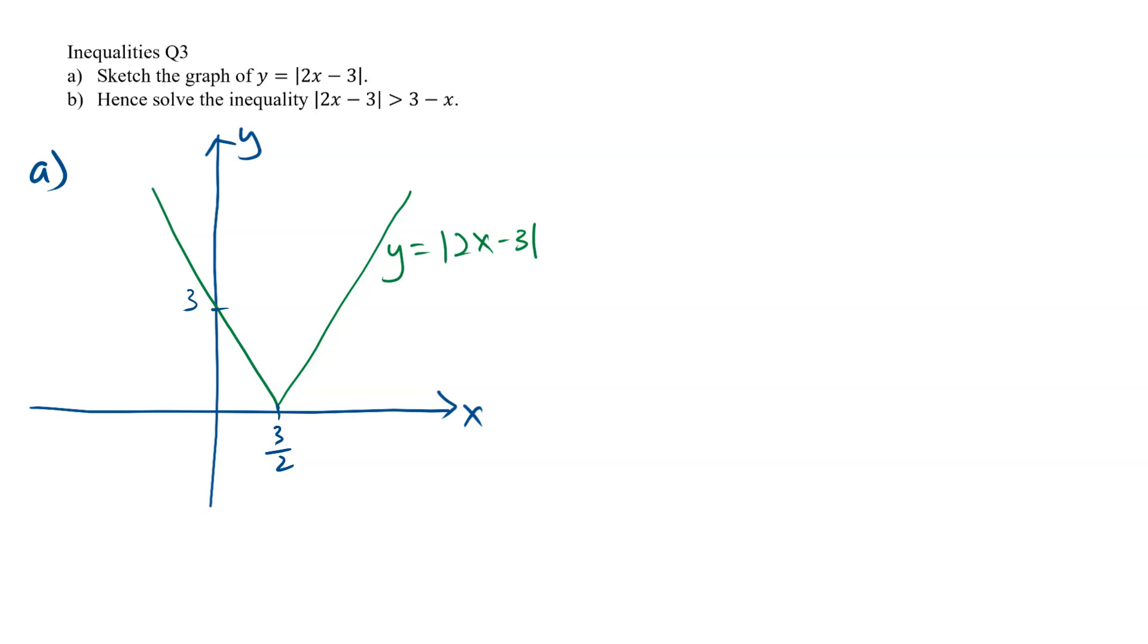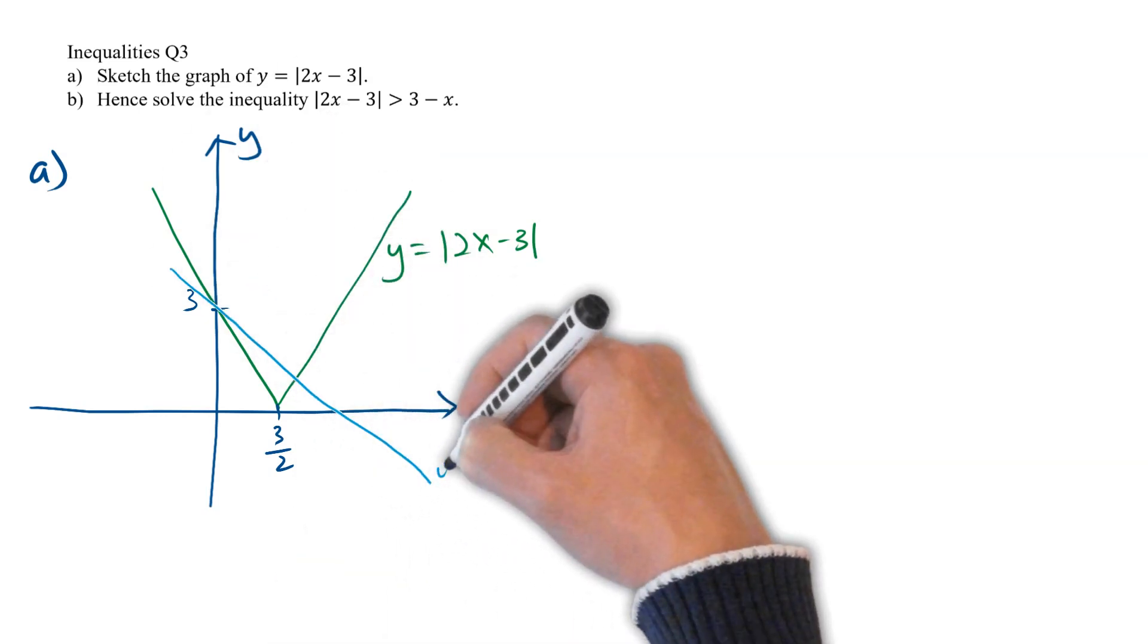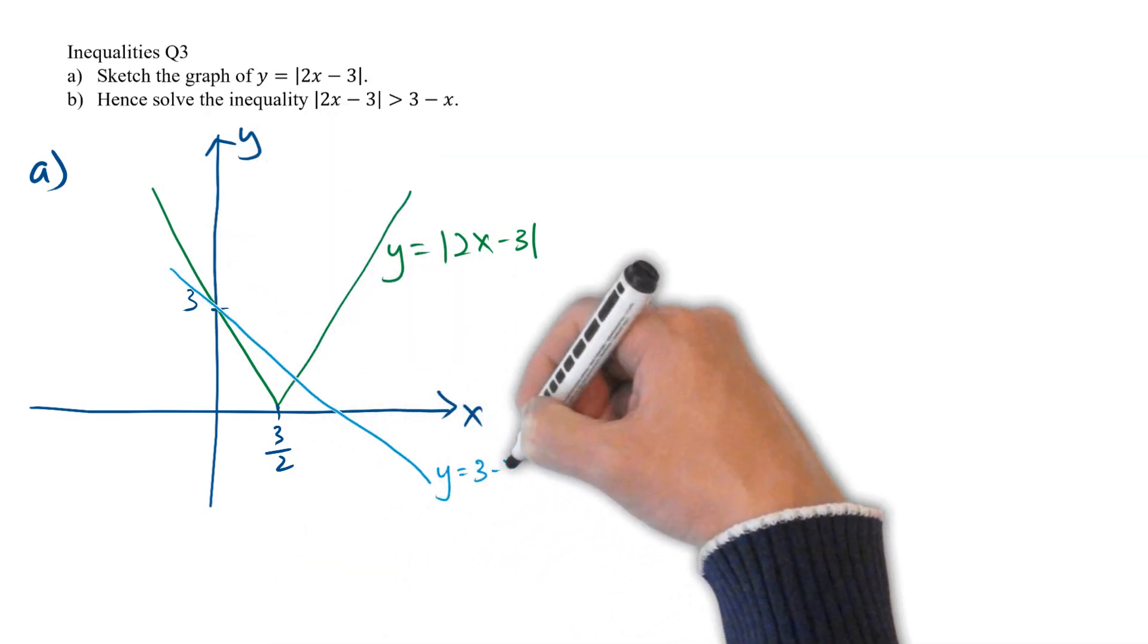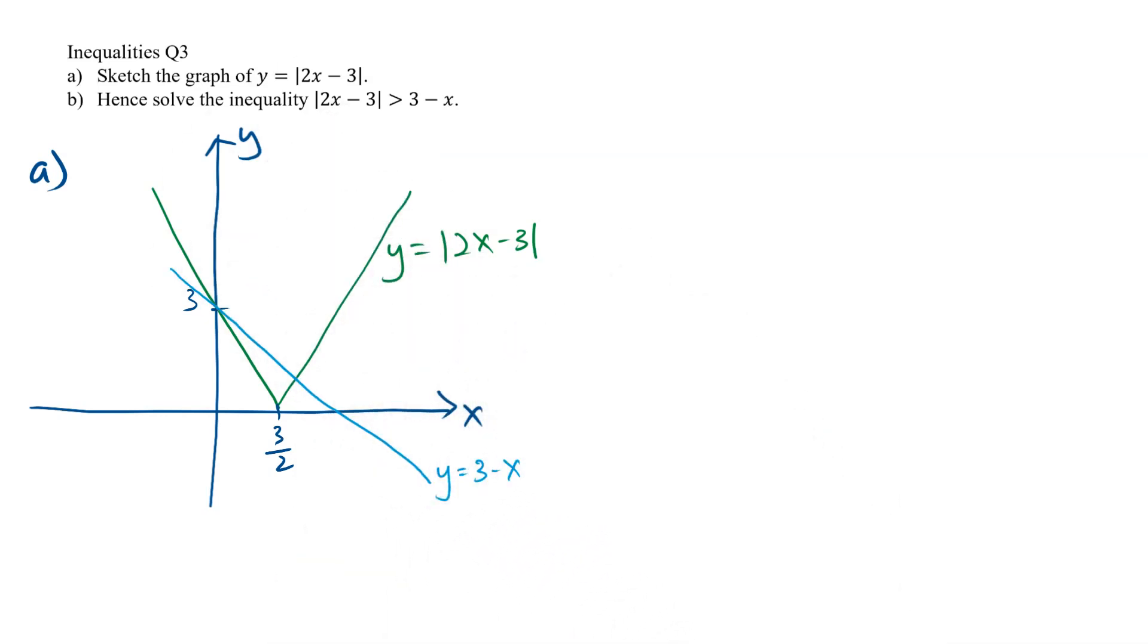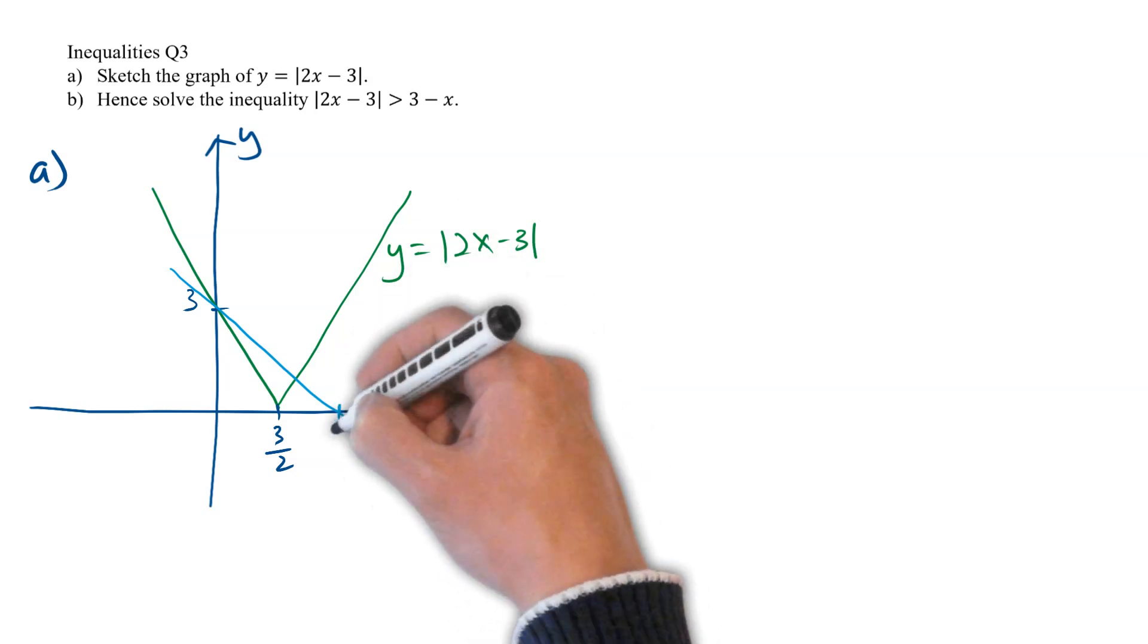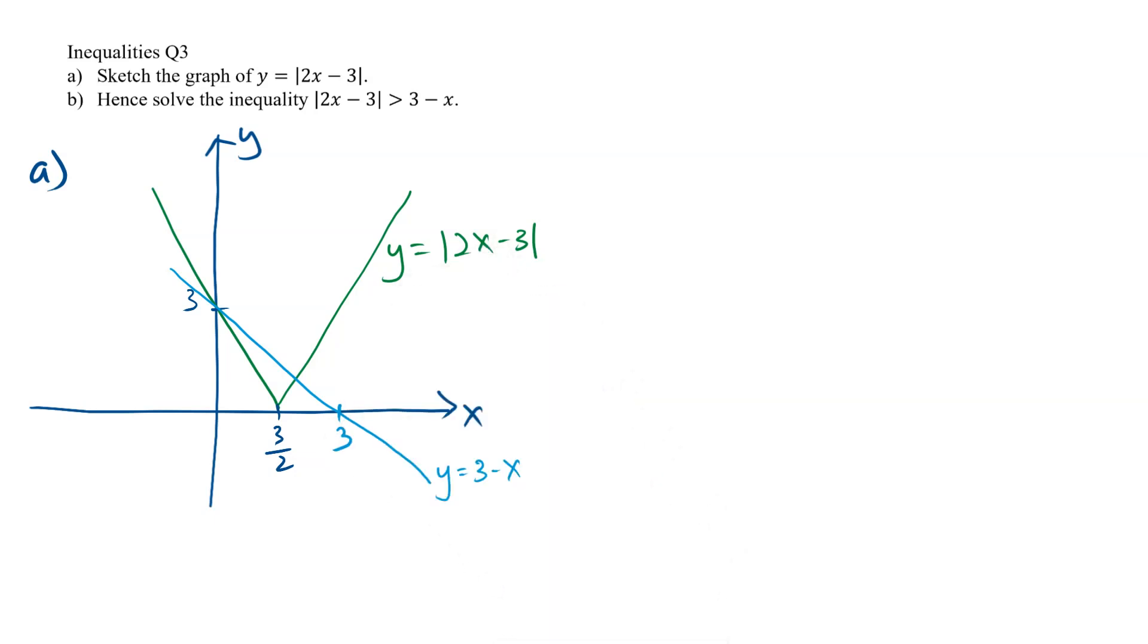We can do so by adding a graph of y equals 3 minus x, which looks like this. It actually intersects the y-axis at the same point as our earlier graph at 0, 3, but it intersects our x-axis at a different point at 3, 0.